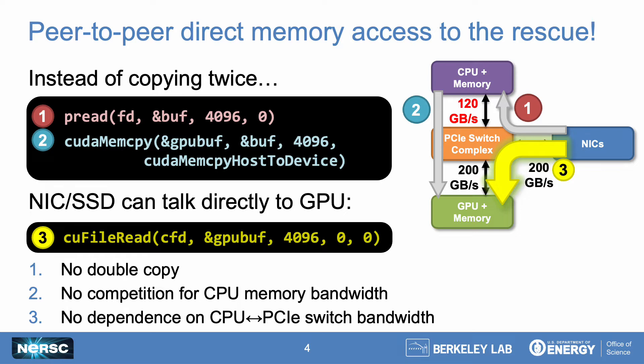Instead of first issuing a read followed by a memcopy, you have to use a new API to perform this operation in a single step. NVIDIA's GPU-Direct Storage, or GDS, is the first production-ready implementation of this technique for GPUs, and it provides the cuFile read call to accomplish this peer-to-peer I/O operation. As shown with the yellow arrow on the right, instead of being limited by that 120 gigabytes per second between PCIe and CPU memory, data can flow freely between the NICs and the GPUs at that full 200 gigabytes per second bandwidth when using GDS.